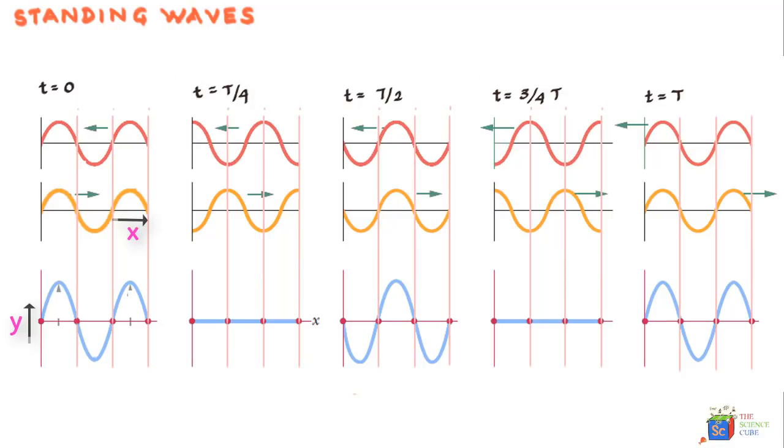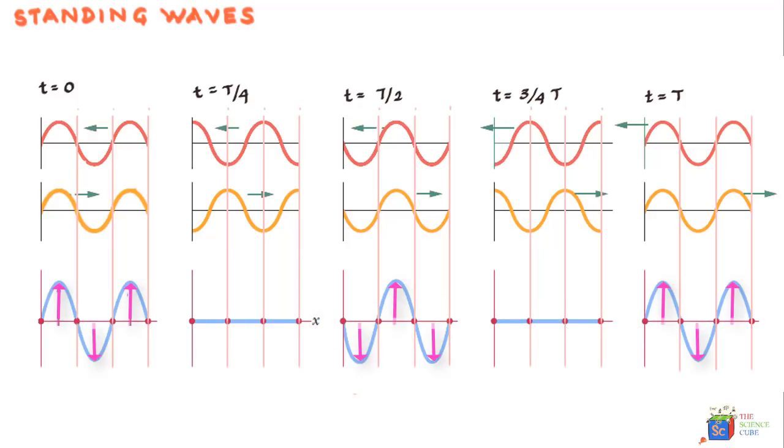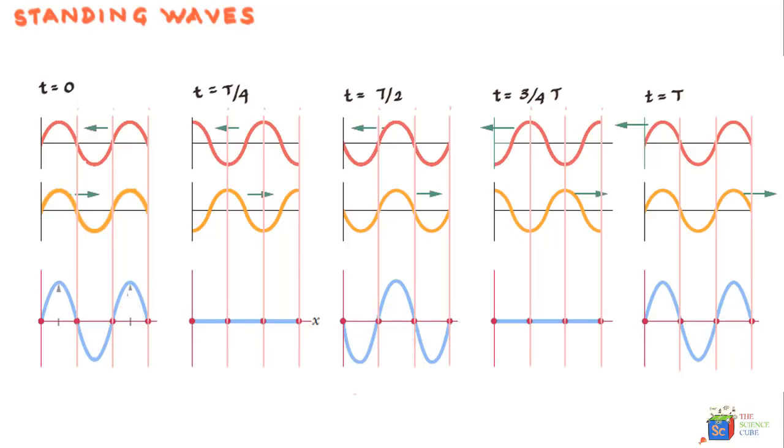Now, the interesting part of this waveform is that there are places where string just does not move. And we call these points nodes. And we can see four such nodes here. And then here are regions or other points in the strings where the amplitude of the wave is at its max. And these are called antinodes. So these wave patterns are what we call standing waves.